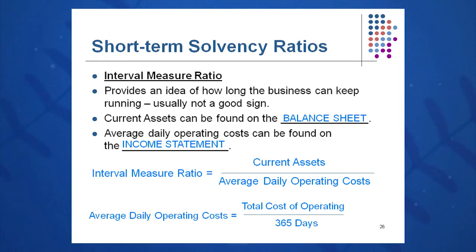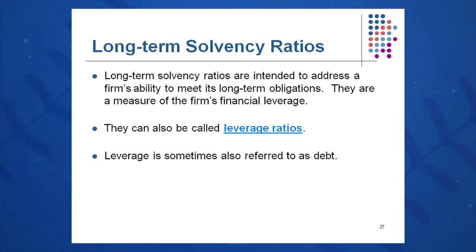The ones to emphasize in short-term solvency are the current ratio and quick ratio — those are the ones to memorize. The second group of the five ratio categories is long-term solvency ratios. These measure how well a company can meet their long-term liabilities and obligations — basically a measure of financial leverage, or how well we're paying off our debts.